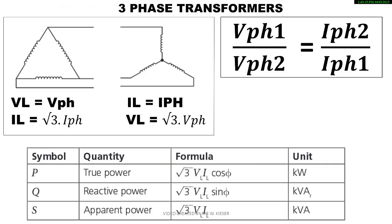Moving on to three-phase transformers. Our three-phase transformer could be connected in delta-star or star-delta; however, the formulas remain the same. For delta, V line always equals V phase; for star, I line always equals I phase. When using the equation for three-phase transformers we must use phase values: V phase 1 over V phase 2 equals I phase 2 over I phase 1. These formulas use square root 3 and line values.